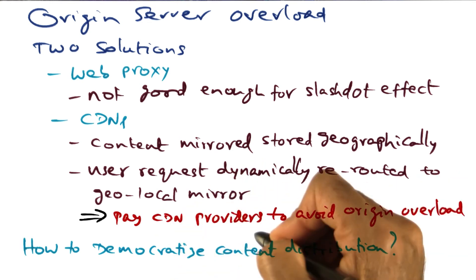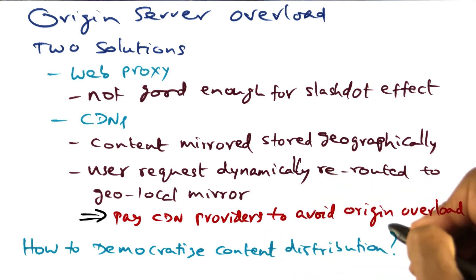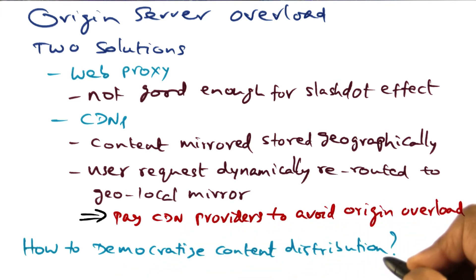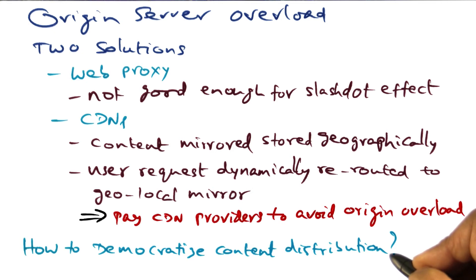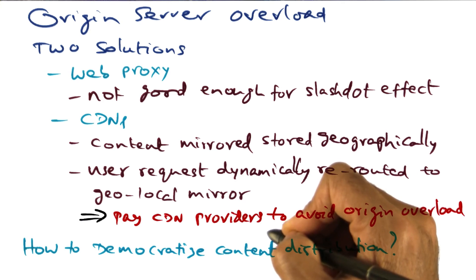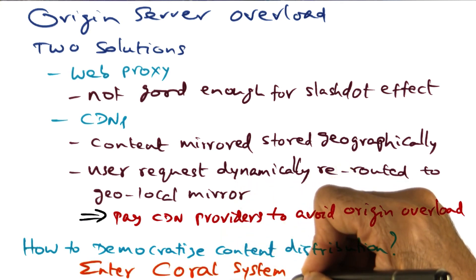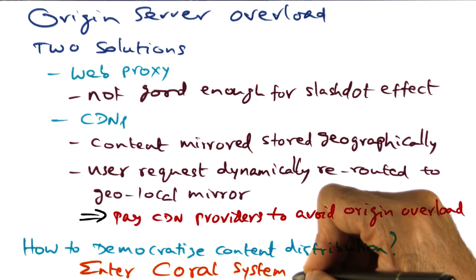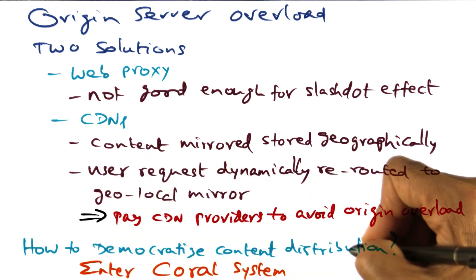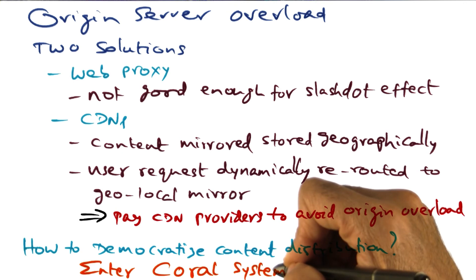You can afford to pay the content distribution network provider to do this automatic mirroring. But how can we democratize content distribution? How am I, in my basement, generating a piece of video and wanting to share it with the world? How am I going to make that available to everybody? If it gets hot, I don't want to get overloaded. I want that content distribution network to work without having to pay big bucks to a provider like Akamai. And this is where the Coral system comes in — this is the paper that I've assigned you to read, which has a technique for democratizing content distribution. The details of the Coral system are what we're going to look at next.